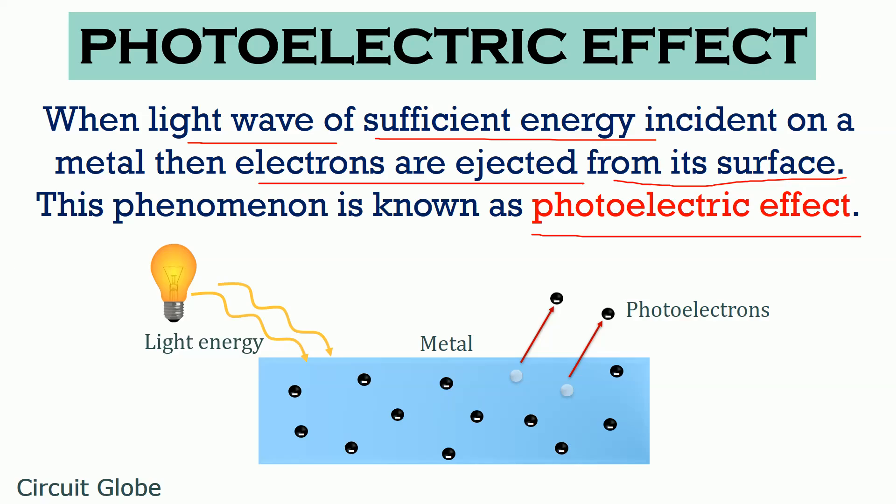Now the question arises that light of any energy can eject the photoelectrons from the surface of the metal. So the answer to this question is no. Basically, each metal has its certain work function. This work function is nothing but the minimum energy which is required by the electrons present in the surface of the metal to get ejected from its surface.